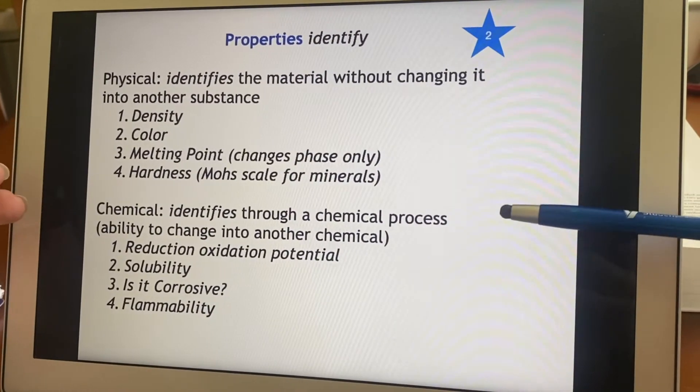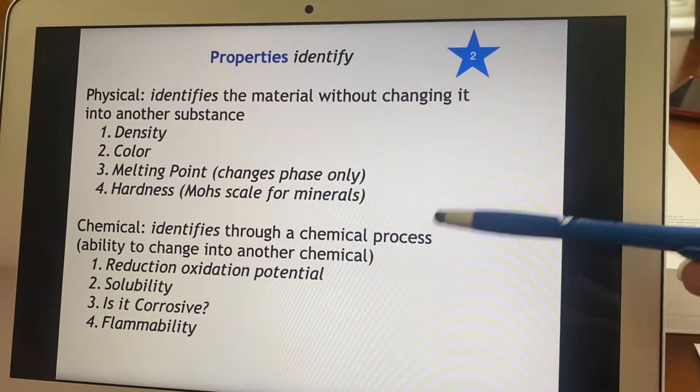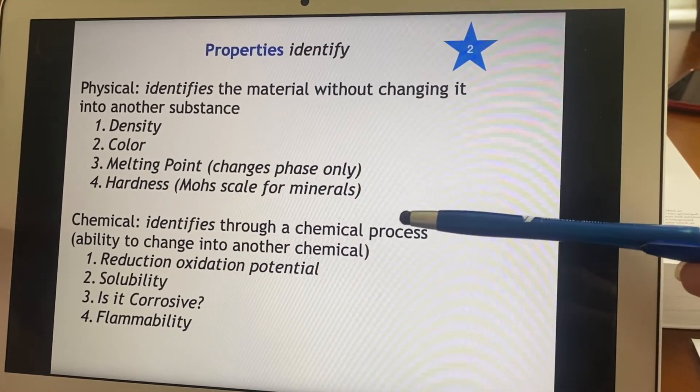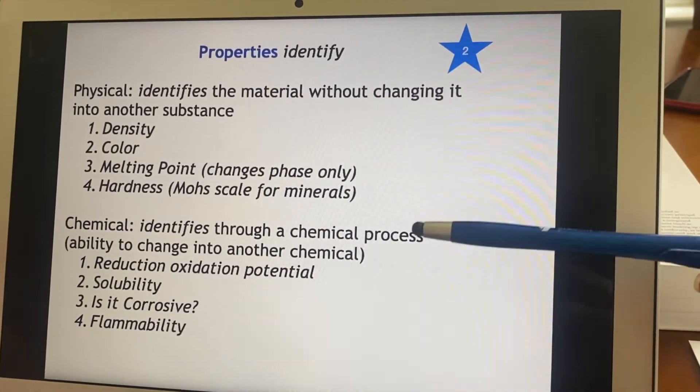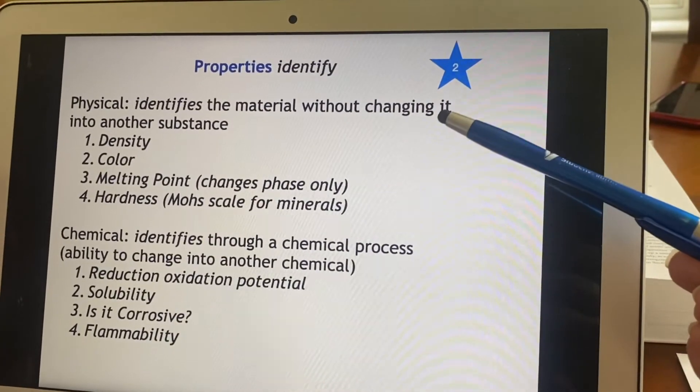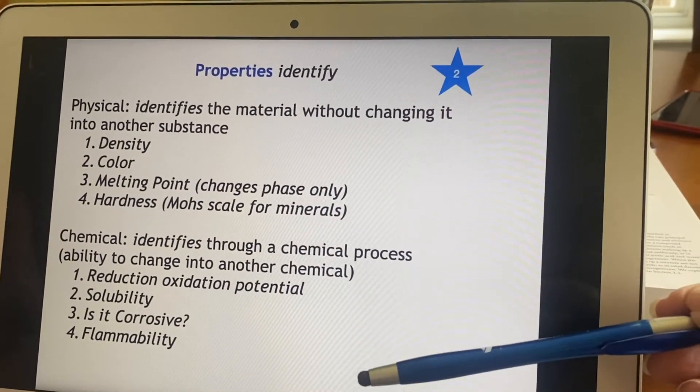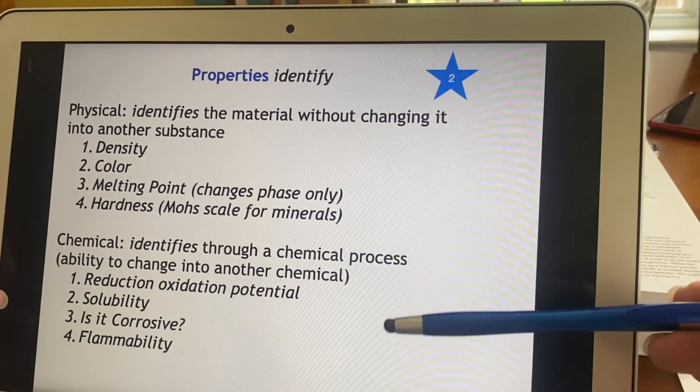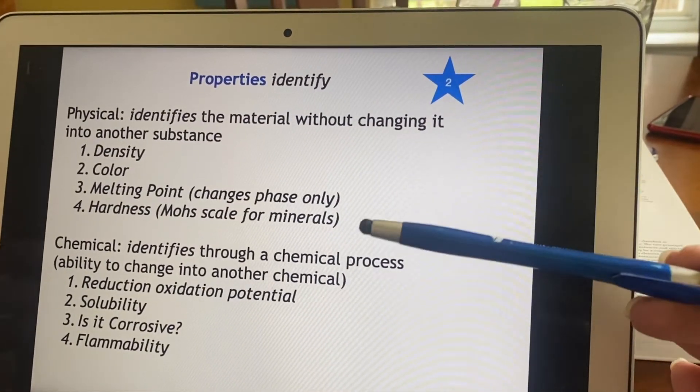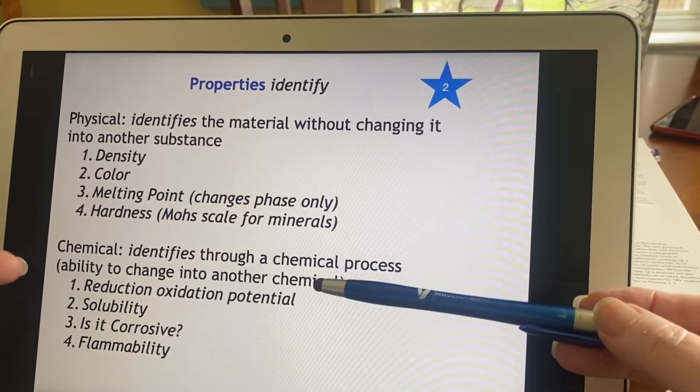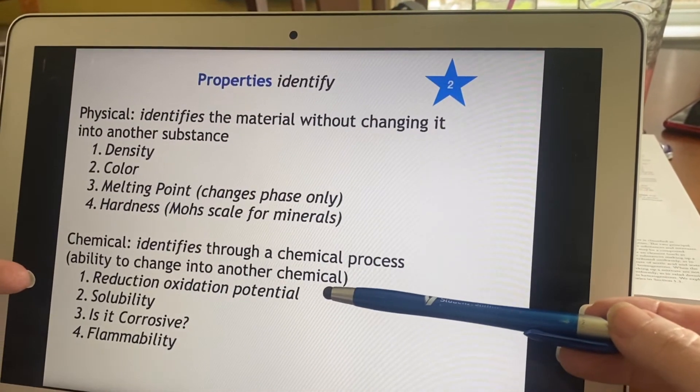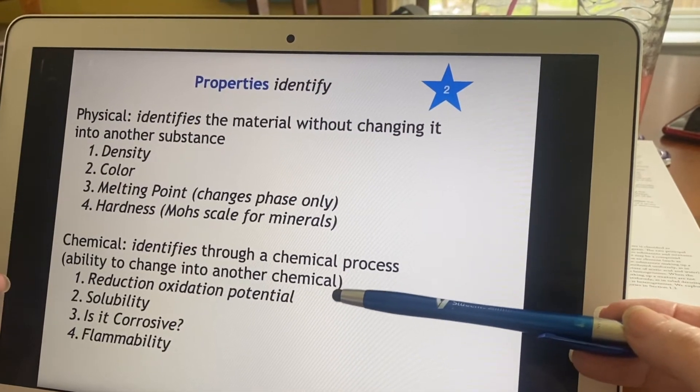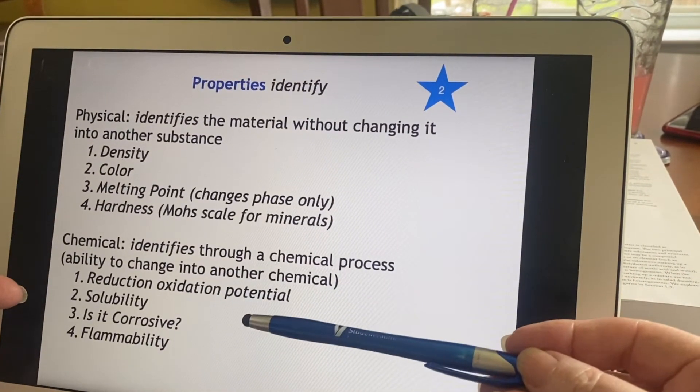On the other hand, we can use chemical properties to identify something as well. But when we do that, we're using a chemical process, and that means it is going to be changed in some way. And that's why we always use the physical properties first before the chemical ones, because we are going to destroy our sample in the process of looking at the chemical properties. So, boy, we have some listed here. The reduction oxidation potential. What the heck is that? Well, that has to do with electrochemistry, and you'll learn about that later.